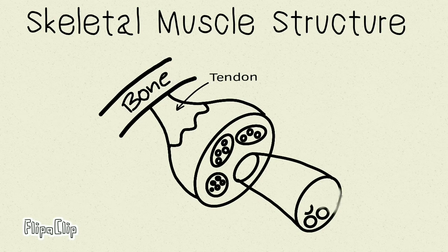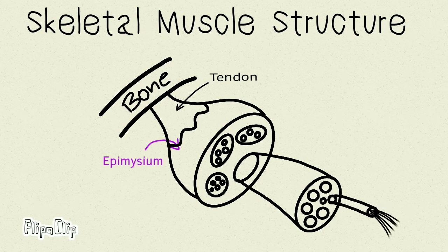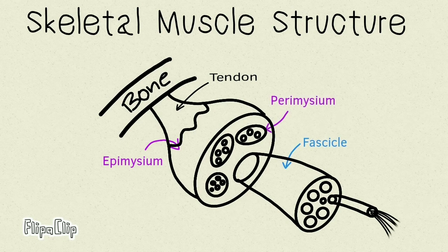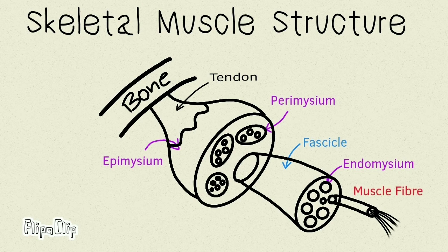Each of these fascicles contain 10 to hundreds of muscle fibers and they are lined by a perimysium. Inside each perimysium, or the fascicle, there are muscle fibers. These muscle fibers are lined individually by the endomysium, which is the innermost layer. This forms a sleeve over the sarcolemma.